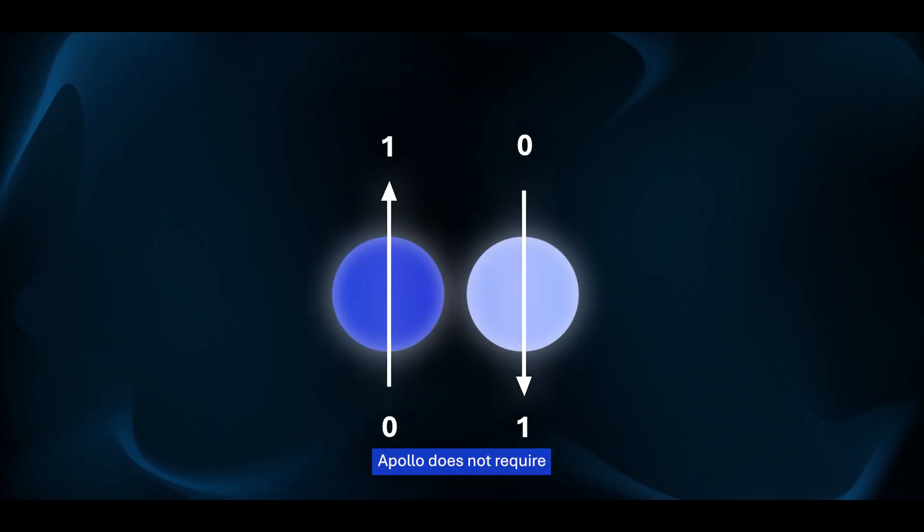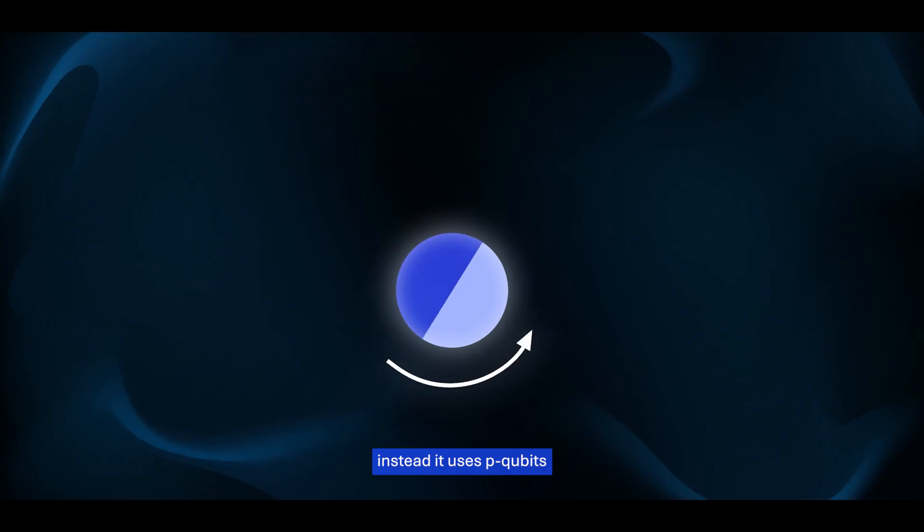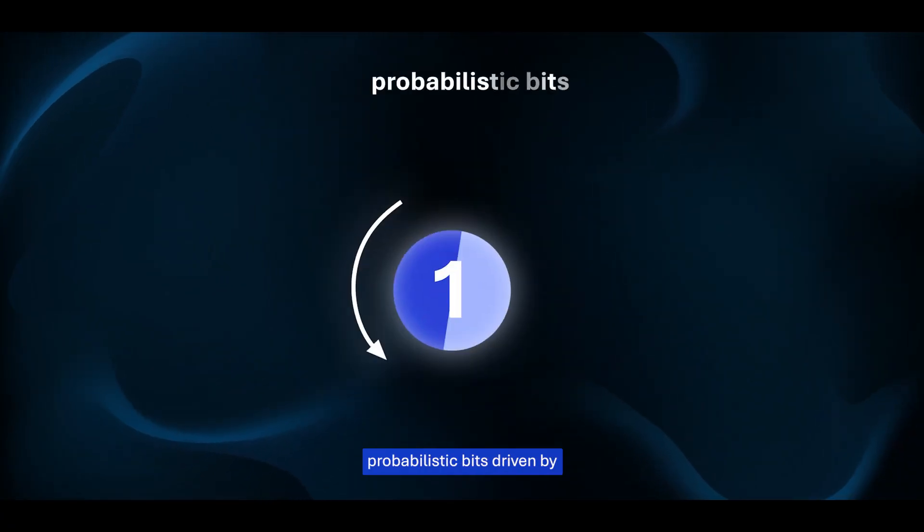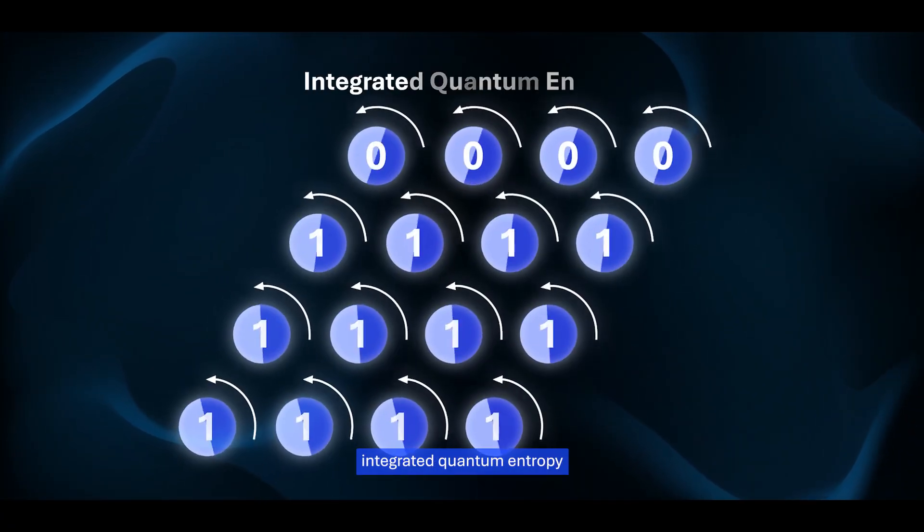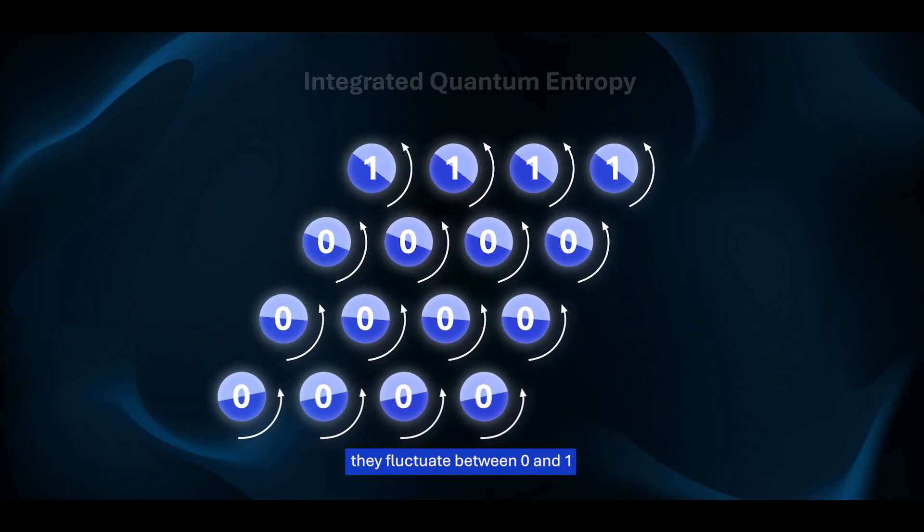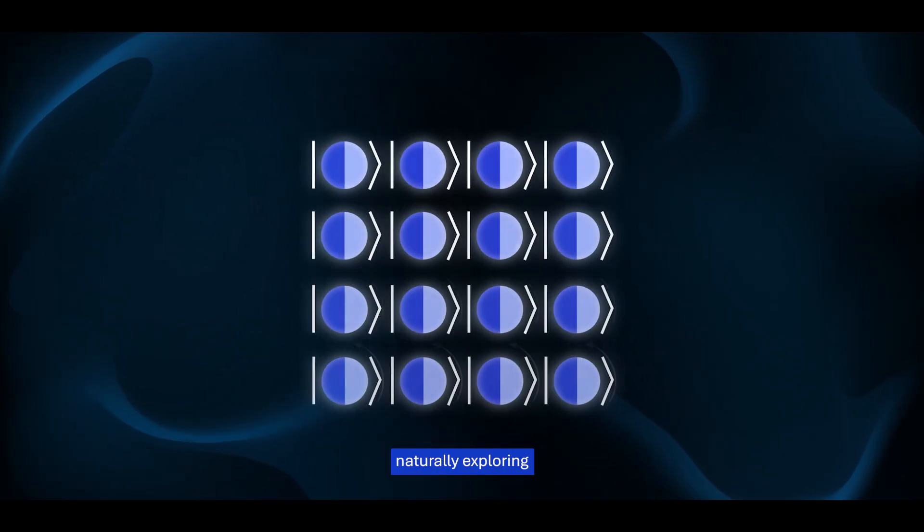Apollo does not require superconducting qubits. Instead it uses p-qubits, probabilistic bits driven by integrated quantum entropy. They fluctuate between zero and one, naturally exploring everything in the solution space.